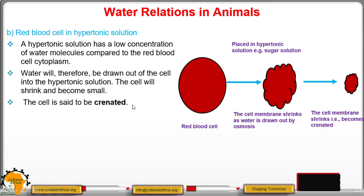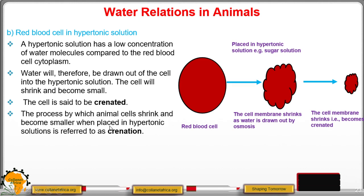The cell is said to be crenated. This is the red blood cell's initial size and shape; then you place it in a hypertonic solution — that is, a highly concentrated solution, for example a sugar solution — it loses water by osmosis, becomes shrunk, and is said to be crenated. So the process by which animal cells shrink and become smaller when placed in a hypertonic solution is called crenation.